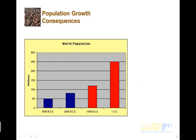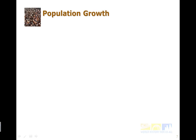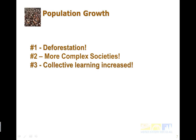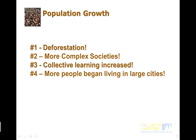There are also consequences of this huge growth. The world population growing much quicker caused some things to happen. Some of those things were deforestation — forests were being removed. Societies became even more complex; in the last era we saw complex societies grow, but now they're getting even more complex. Collective learning increased, so the amount of knowledge people were able to share grew as well. And more people began living in large cities, shifting the population toward urban areas.